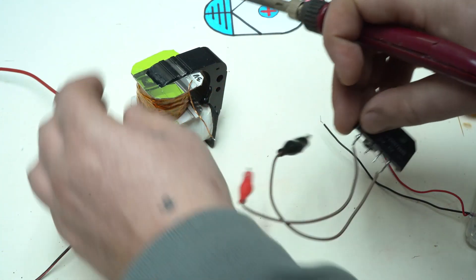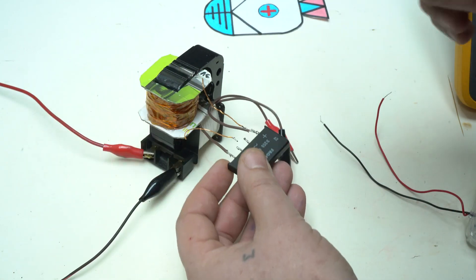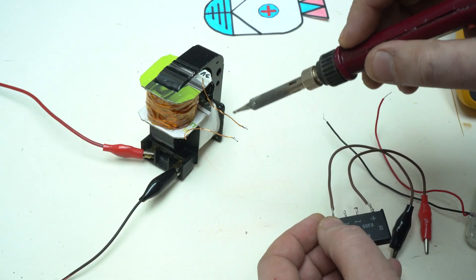Right now I am going to solder the bridge rectifier to the output wires from the transformer.